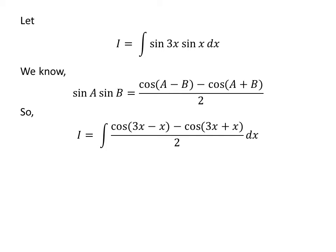So I is equal to the integral of cosine of (3x minus x) minus cosine of (3x plus x), upon 2, with respect to x. Thus, I is equal to the integral of cosine of 2x minus cosine of 4x, upon 2, with respect to x.